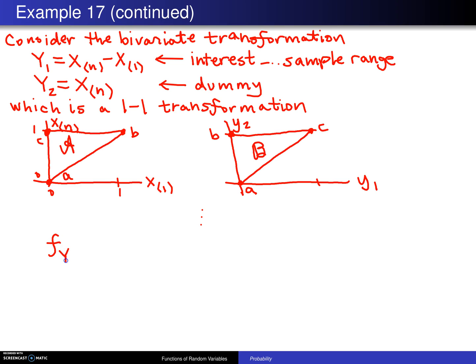Eventually, you are going to wind up with the joint distribution of Y1 and Y2 as the following. It will be n times (n-1) times y1 raised to the (n-2) power for 0 is less than y1 is less than y2 is less than 1. That is the region here, which is script B.